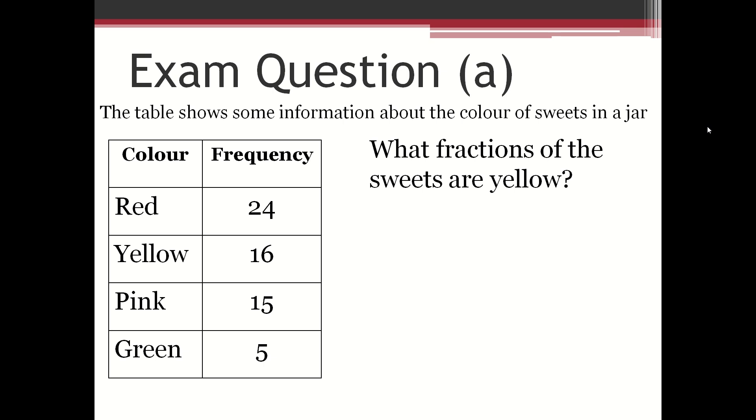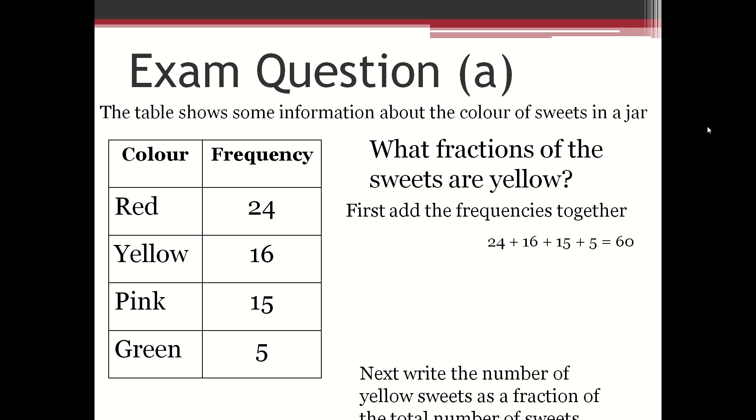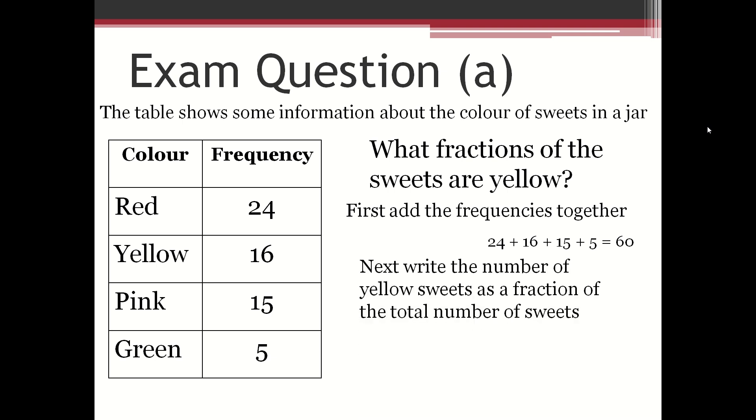What fraction of the sweets are yellow? First, add the frequencies together: 24 plus 16 plus 15 plus 5 equals 60. Next, write the number of yellow sweets as a fraction of the total number of sweets,